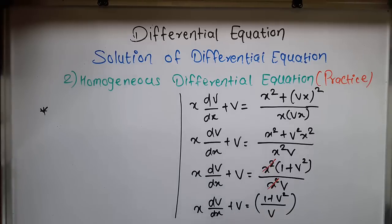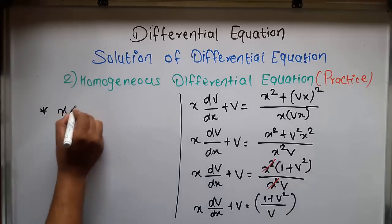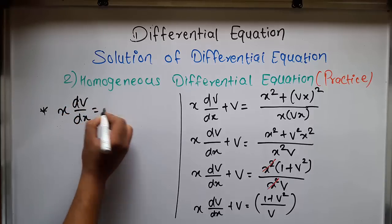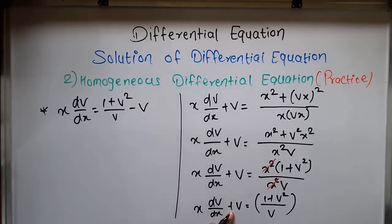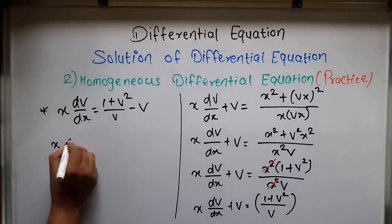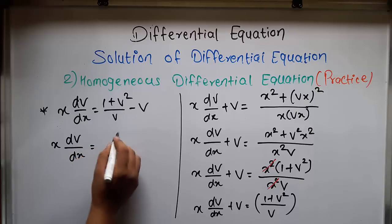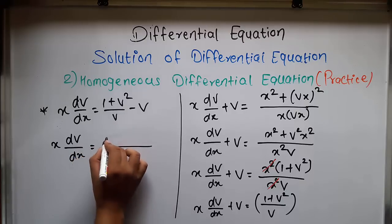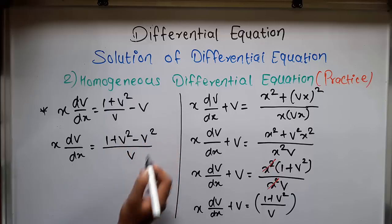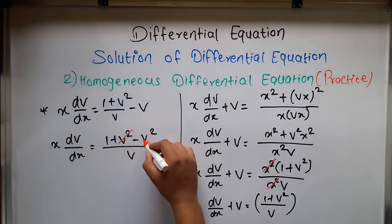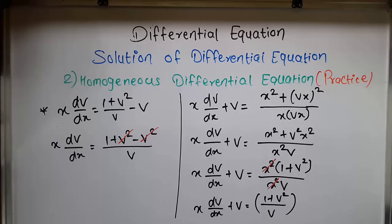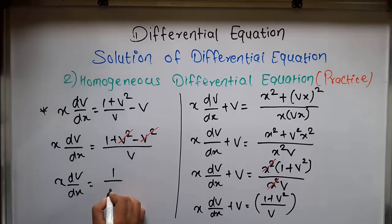Now, we move v to the right-hand side. Our equation becomes x dv/dx equal to (1 + v²)/v minus v. The positive v goes to the right-hand side and becomes negative. So x dv/dx equal to, multiplying through by v, gives 1 + v² minus v². The v² and v² cancel, and our new equation becomes x dv/dx equal to 1/v.